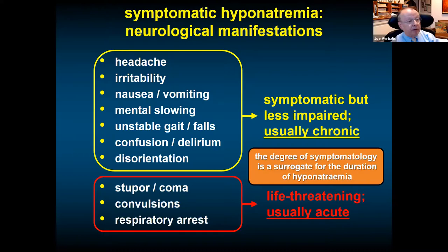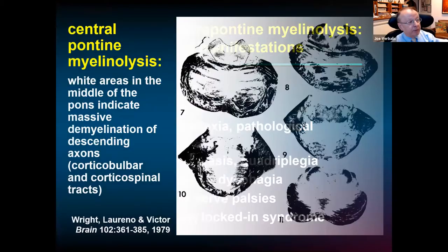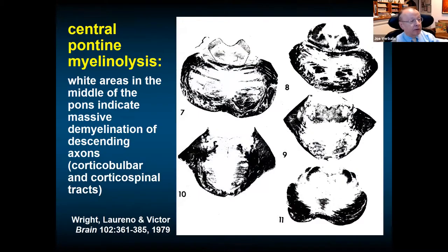Treating hyponatremia is a balance between the risk of the hyponatremia itself and the risk of correction. If you correct too quickly, you can cause osmotic demyelination syndrome — formerly called central pontine and extrapontine myelinolysis. In its most severe form, this leads to demyelination of motor neurons in the central pons and midbrain, causing quadriplegia, cranial nerve palsies, and a locked-in syndrome where the patient is conscious but cannot move any muscles.